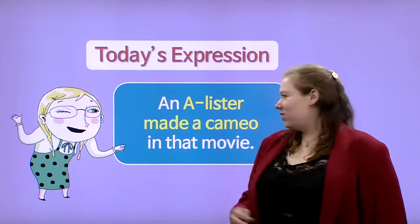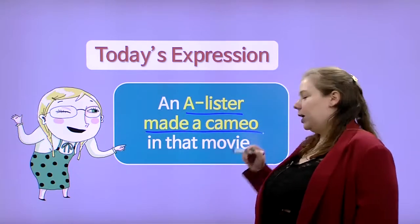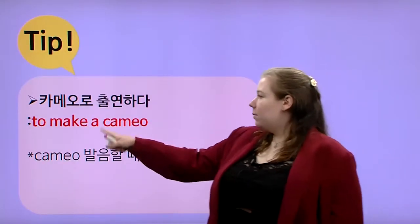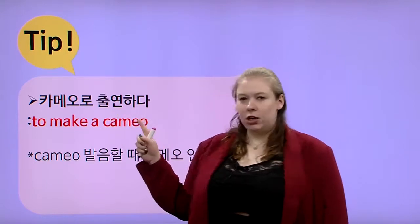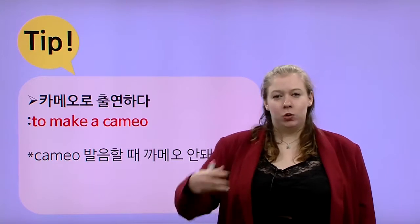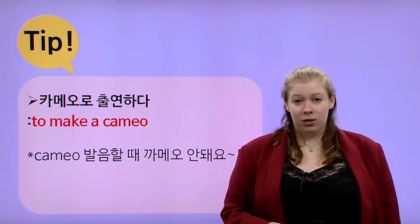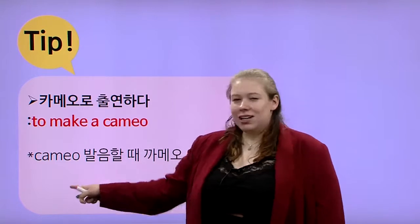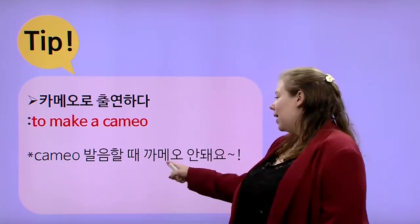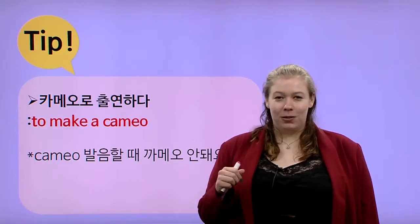So let's go over the phrase 'A-lister' and also 'to make a cameo.' 카메라로 출연하다 — to make a cameo — to appear in a movie as yourself. Now, the pronunciation is very important here. 까매요 — 안 돼요. You can't pronounce this as 까매요.